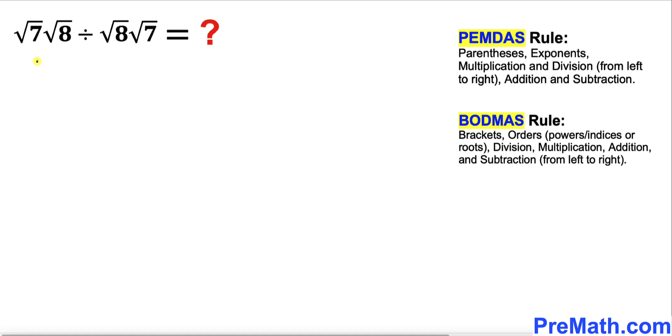So therefore we can write this part as square root of 7 times square root of 8 divided by square root of 8 and then we are going to write down this part times square root of 7. Now we can see that this square root of 8 and this square root of 8 they reduce each other.